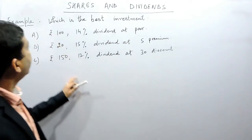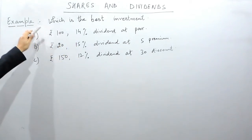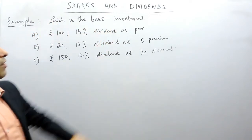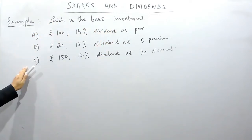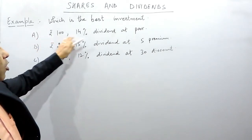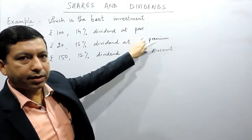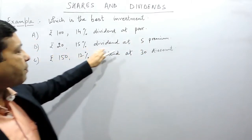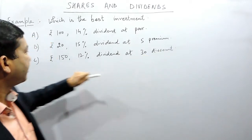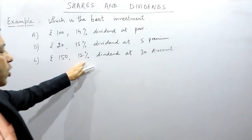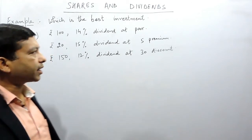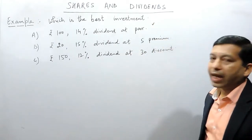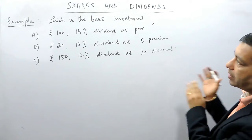Hello everyone. Today we are discussing the question of shares and dividends — which is the best investment among these three. The first is rupees 100, 14% dividend at par. The second is rupees 20, 15% dividend at 5 premium. And the third investment is rupees 150, 12% dividend at 30 discount.